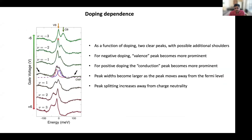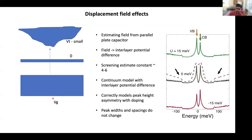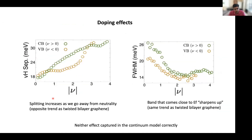We worked with our theory friends to do a more realistic Hartree-Fock calculation, and you can start to go in the right direction of reproducing the widths of these peaks. We also looked at the doping dependence of the spectra. As you apply doping, the two peaks start to become distinct and split from each other. The valence band becomes strong at negative filling and the conduction band becomes strong at positive filling. There are some broad agreements with the continuum model, but the details — particularly the widths of these peaks and the doping dependence of the separation between peaks — are not properly captured by the continuum model alone.